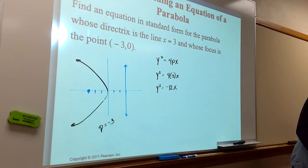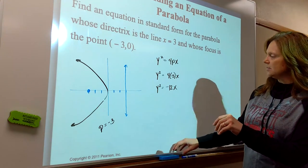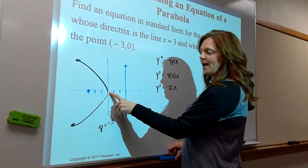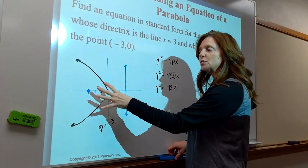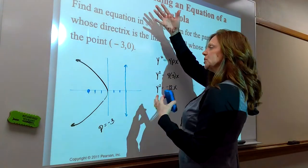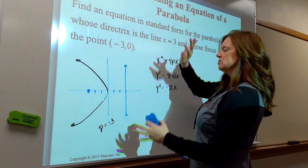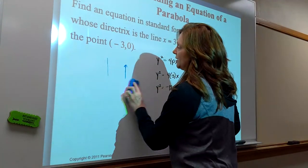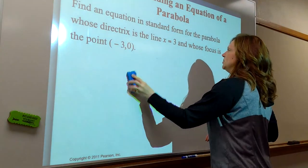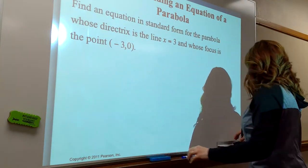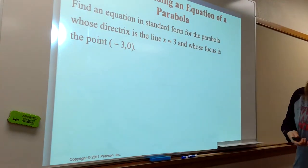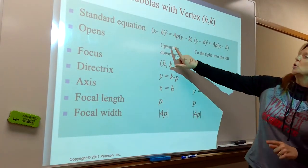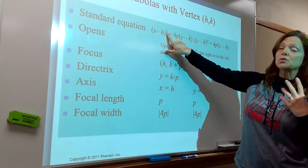Now we're going to add one more thing: a parabola doesn't necessarily have to have its vertex at (0, 0) — it can be moved around. It can still open up, down, left, or right, but I'm going to move it. So if I have a new vertex other than (0, 0), we'll see that here. Opening up or down still has x squared.